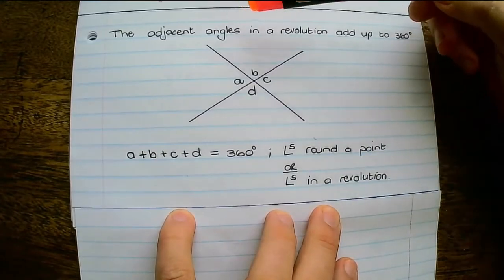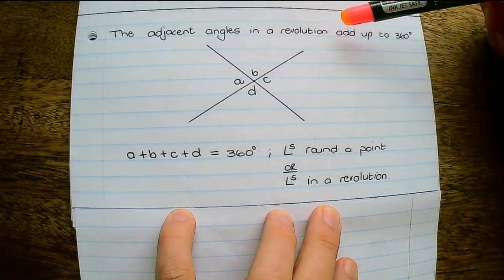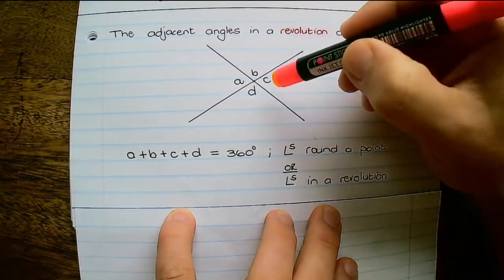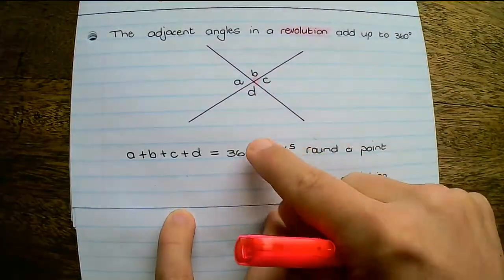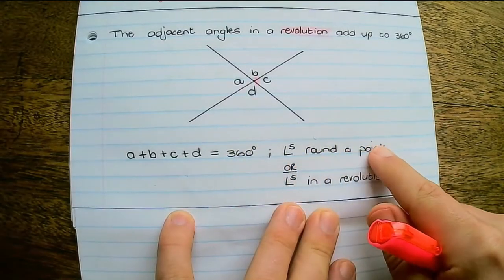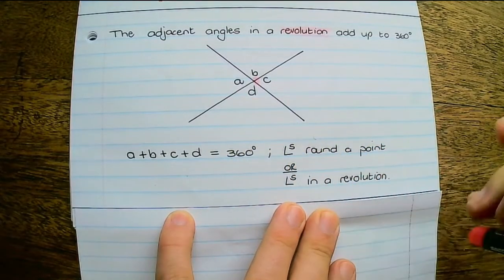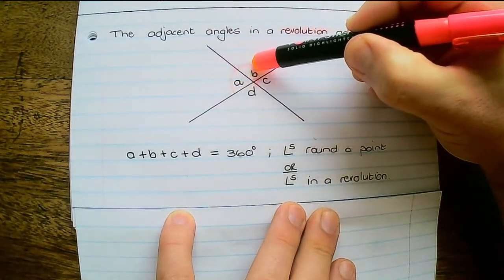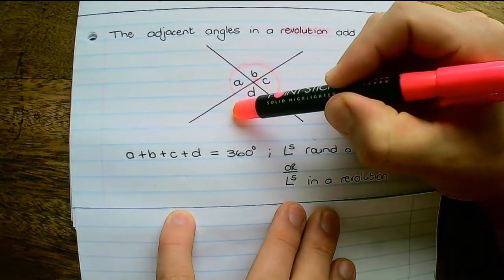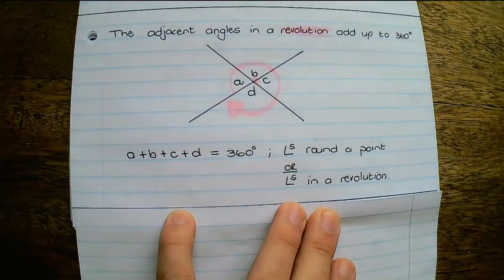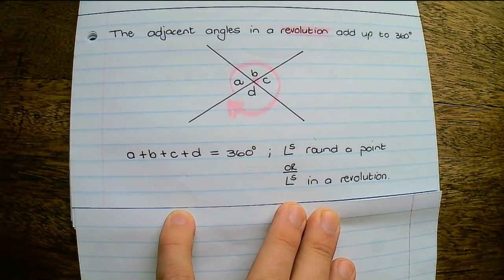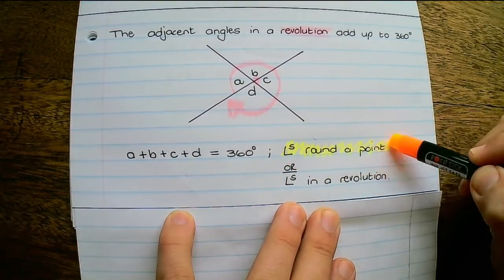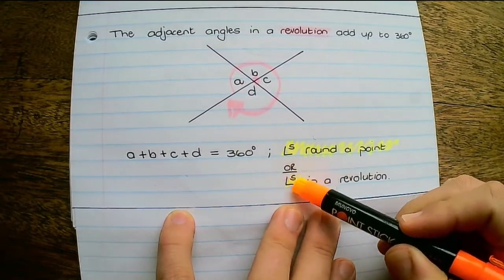Next up, we have adjacent angles in a revolution add up to 360 degrees. The word 'revolution' is referring to around a point. So the reason is 'angles around a point' or 'angles in a revolution'. If I add up all of the angles A plus B plus C plus D, they add up to 360 degrees. The acceptable reason is 'angles around a point'; you can also say 'angles in a revolution'.